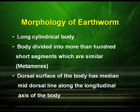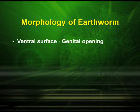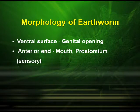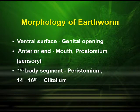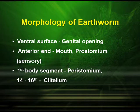The dorsal surface of the body has a median mid-dorsal line which runs along the longitudinal axis of the body. On the ventral surface they have the genital opening. On the anterior end they have the mouth and the prostomium which is sensory in function. The first body segment in earthworm is known as the peristomium. From the 14th to the 16th segment they have the presence of the clitellum. Their body is distinctly divided into three regions: the pre-clitellum, the clitellum, and the post-clitellum.